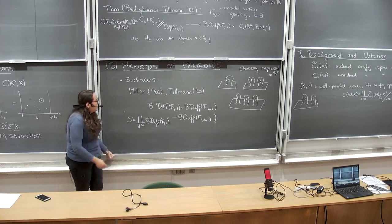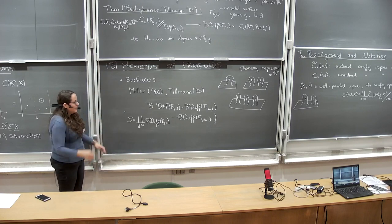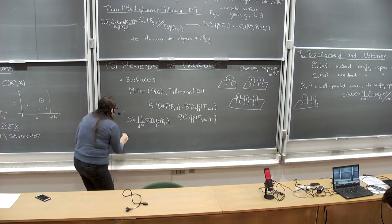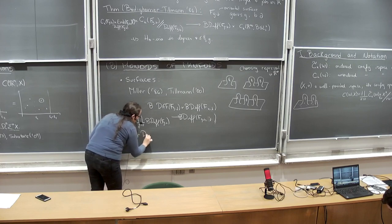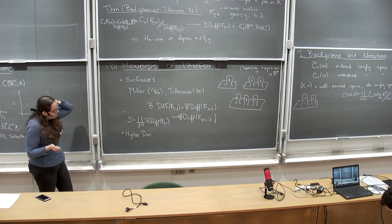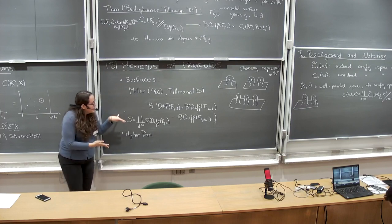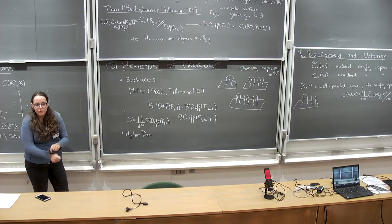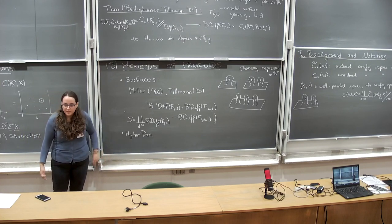This is quite an important monoid. It was used in works related to the Mumford conjecture — now the Madsen–Weiss theorem. More recently it was generalised to higher dimensions. Oscar Randal-Williams, Søren Galatius showed that the generalisation for higher dimensional manifolds is crucial, for instance, for understanding the homotopy type of the cobordism category.